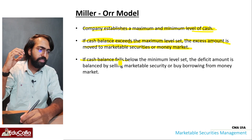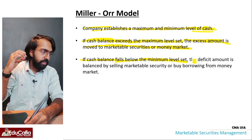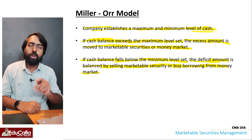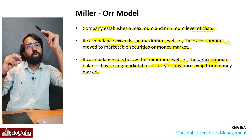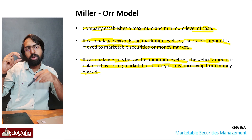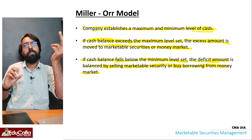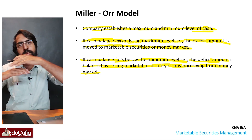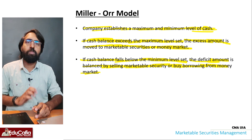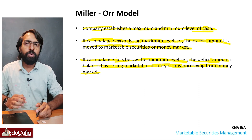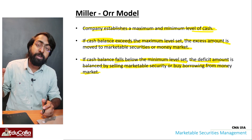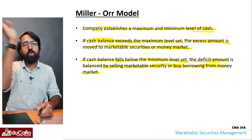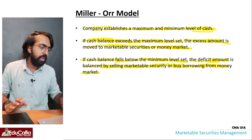If the cash balance falls below the minimum level, the deficit amount is balanced by selling marketable securities or borrowing from the money market. This is the Miller-Orr Model.